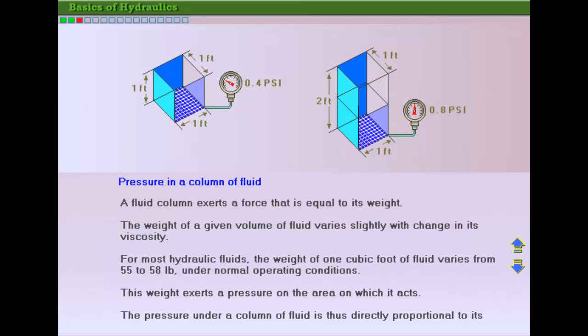A column of fluid exerts a force that is equal to its weight. The weight of a given volume of fluid varies slightly with change in its viscosity. The weight of the fluid column exerts a pressure on the area over which it acts. This pressure is directly proportional to the height of the column of fluid.